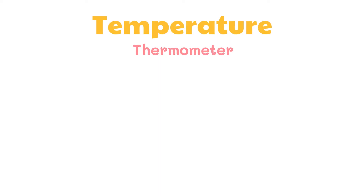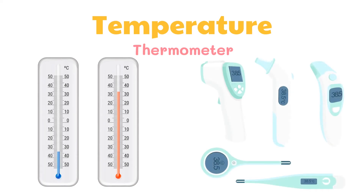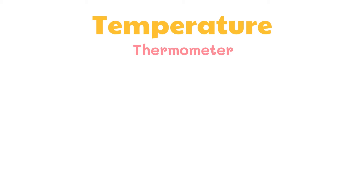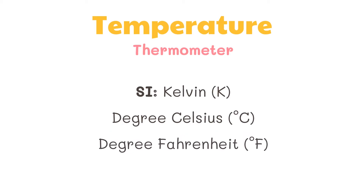The most common type of thermometer is the mercury in a glass tube, but we also have the digital thermometer. The international system unit of measurement for temperature is Kelvin, but there are other scales that can be used, such as degree Celsius and degree Fahrenheit.